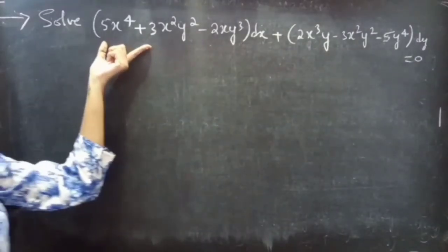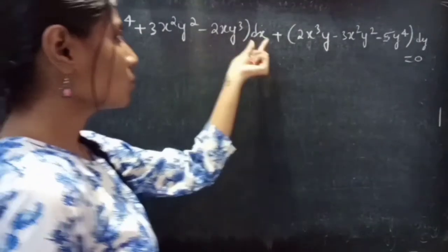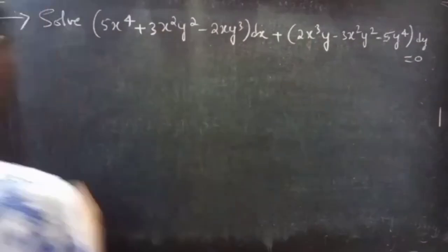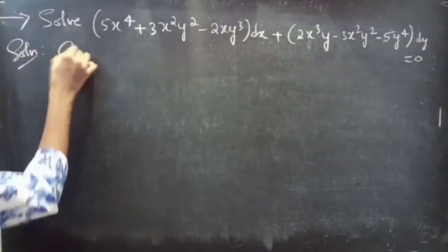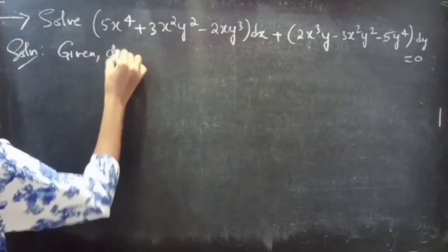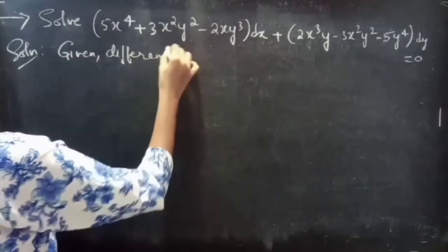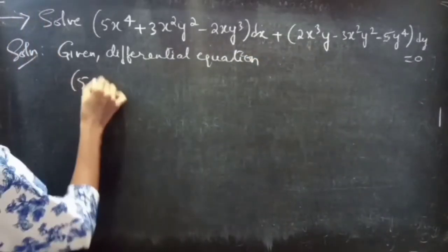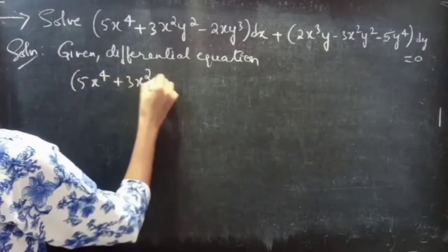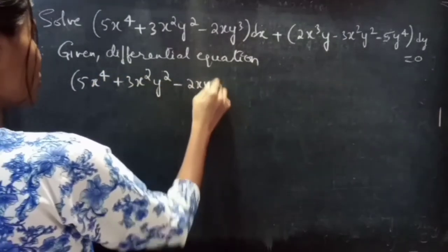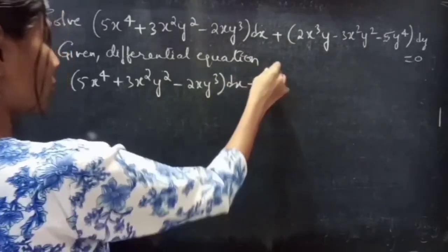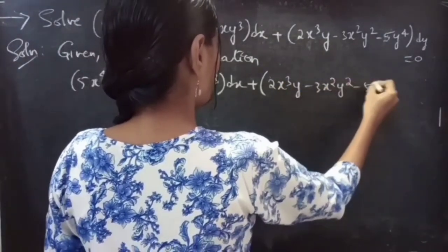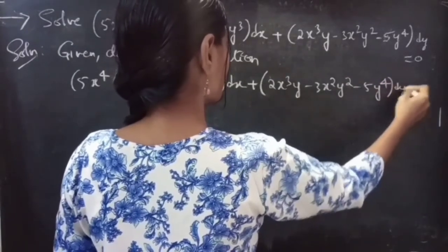Problem: Solve (5x⁴ + 3x²y² − 2xy³) dx + (2x³y − 3x²y² − 5y⁴) dy = 0.